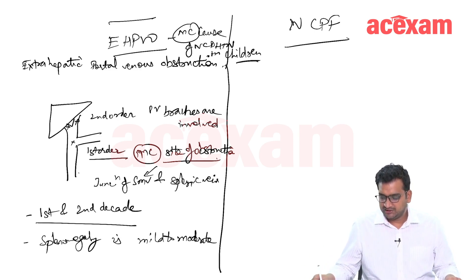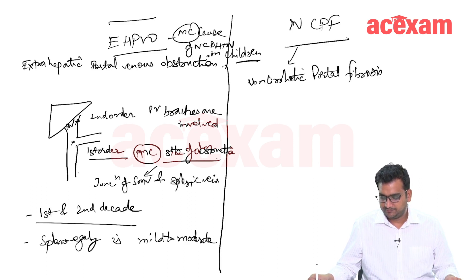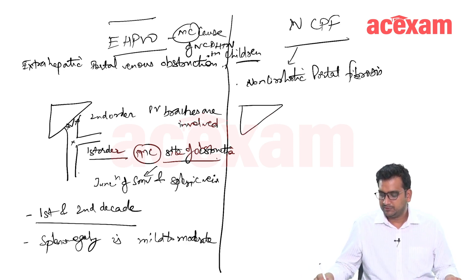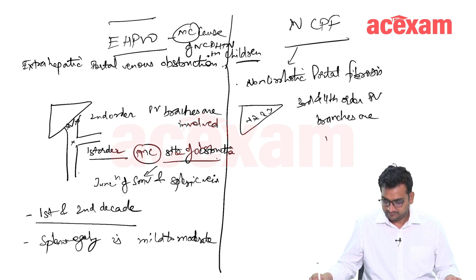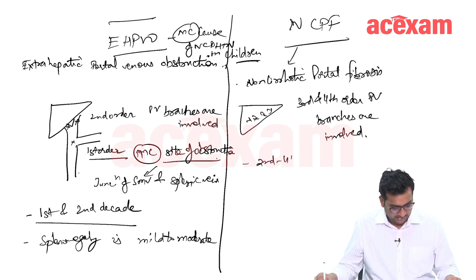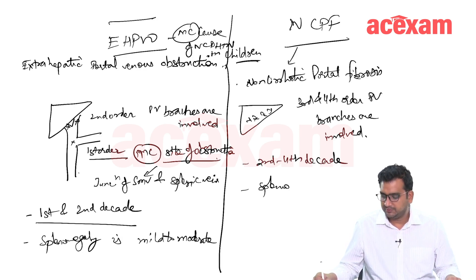NCPF stands for non-cirrhotic portal fibrosis. It involves the third and fourth order portal vein branches, which are mainly intrahepatic. NCPF is mainly seen in the second to fourth decade of life, and splenomegaly is more common and severe compared to EHPVO.